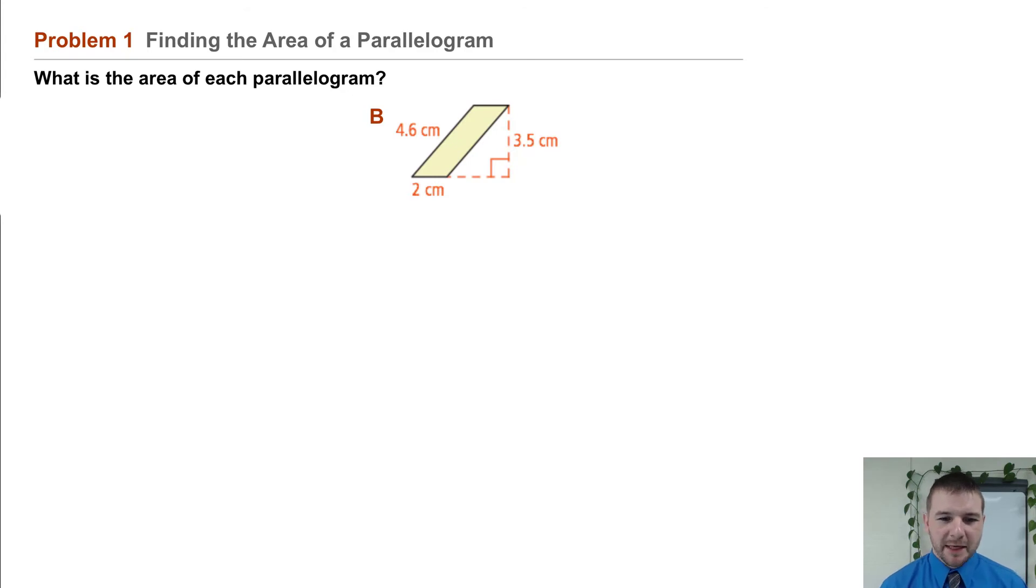In part B, we're given a different parallelogram. Base of 2, height of 3.5 centimeters, and a slant height or side of 4.6 centimeters.